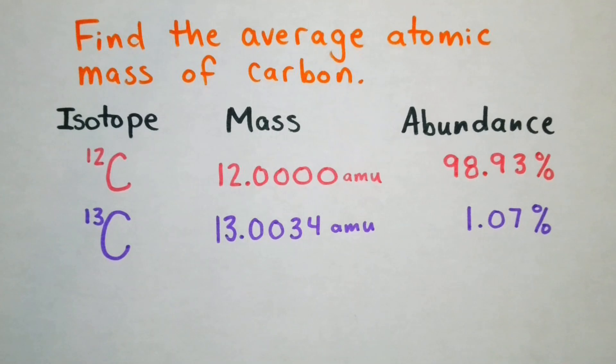So this is a pretty simple calculation. What you're going to need to know is each isotope of carbon, each isotope's mass, and their relative abundance.